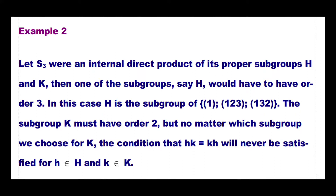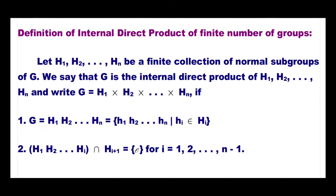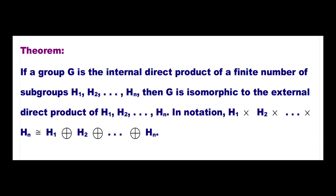General definition: Let H₁, H₂, …, Hₙ be a finite collection of normal subgroups of G. We say G is the internal direct product of H₁, H₂, …, Hₙ, written G = H₁H₂…Hₙ, if: (1) G = {h₁h₂…hₙ : hᵢ ∈ Hᵢ}, and (2) (H₁H₂…Hᵢ) ∩ Hᵢ₊₁ = {e} for i = 1, 2, …, n−1. The next theorem will show that the external and internal direct products are isomorphic to each other.